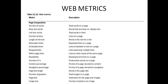Web metrics under page composition include: number of words — total number of words on the page; body text words — words that are body versus display text; link text words — words in links; number of links — links on a page; length of link text — words in the text for a link; redundant links — repeated links on a page; embedded links; backward links; within-page links — links to other areas of the same page; readability — reading level of text on a page; number of exclamation marks; content percentage; navigation percentage — portion of the page devoted to navigation; title length — words in the page title; number of graphics — total images on the page; and image size — number of pixels in an image.